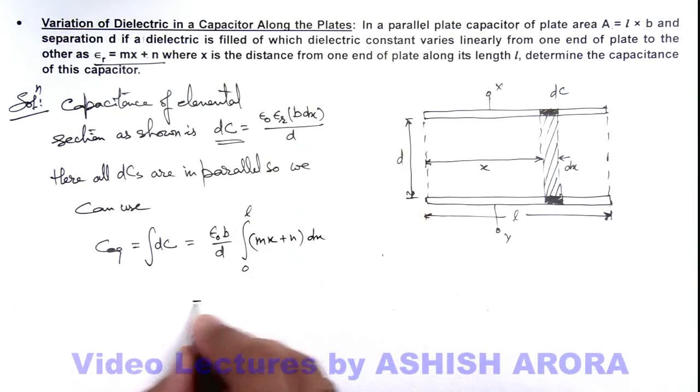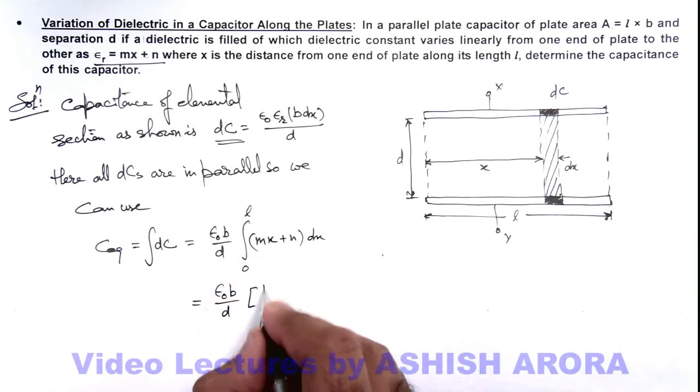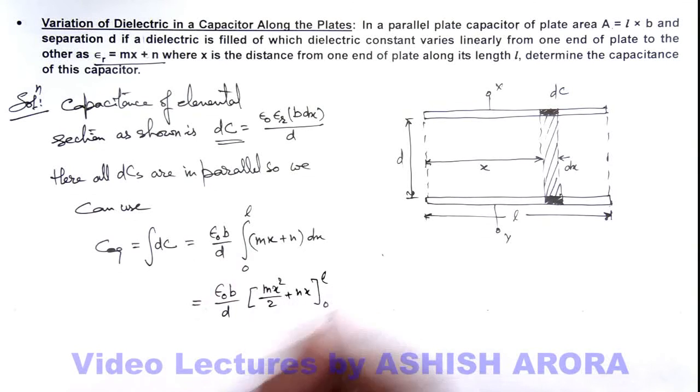So on substituting we are getting ε₀b/d, and on integrating we are getting mx²/2 + nx, limits from zero to l.